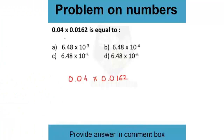Now let's solve a decimal multiplication question: 0.04 × 0.0162. Rather than multiplying directly, convert them using powers of 10 to make it easier. Write 0.04 as 4 × 10⁻², and 0.0162 as 162 × 10⁻⁴, since there are 4 decimal places needed to convert 0.0162 to 162.